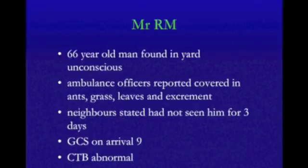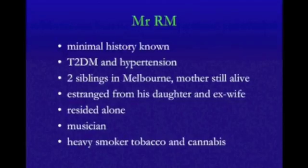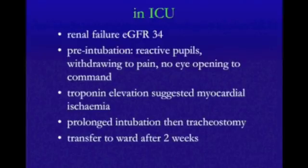His Glasgow Coma Scale on arrival was nine — he was fairly confused, not obeying commands, not opening his eyes to commands, and his CT brain was very abnormal. He had renal failure and went to ICU. We knew from his medications that he had type 2 diabetes and hypertension. He resided alone, was a musician with a fairly alternative lifestyle, a heavy smoker of tobacco and cannabis. He was very sick — these people have often had bilateral infarcts and are very unwell.